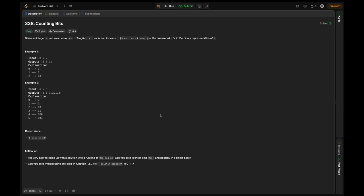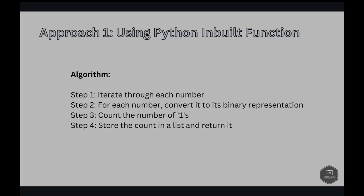Approach 1: using the Python built-in function. This is a straightforward approach. Python offers an elegant one-liner solution leveraging its powerful built-in functions. This method uses the bin function to convert a number into its binary representation and then counts the number of 1s in the binary string. The algorithm iterates each number from 0 to n, converts it to binary using the bin function, counts the 1s using the count method, stores the count in a list, and returns it.